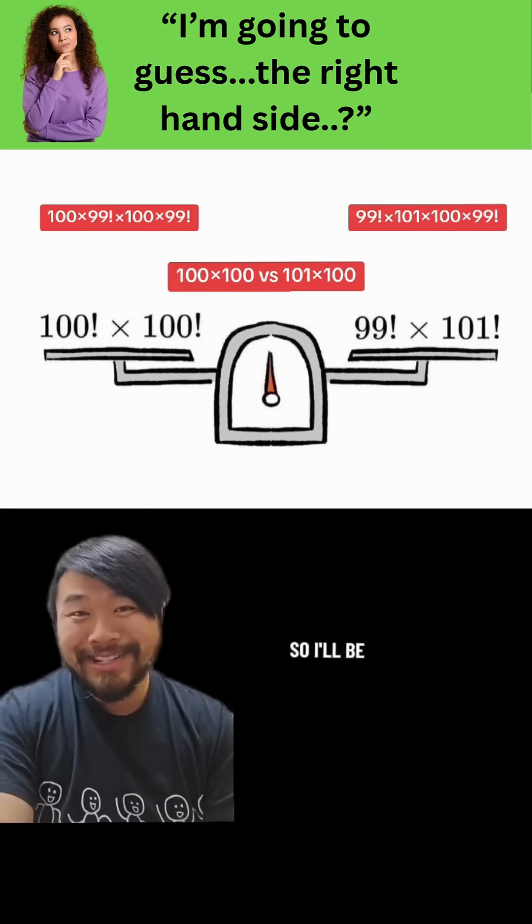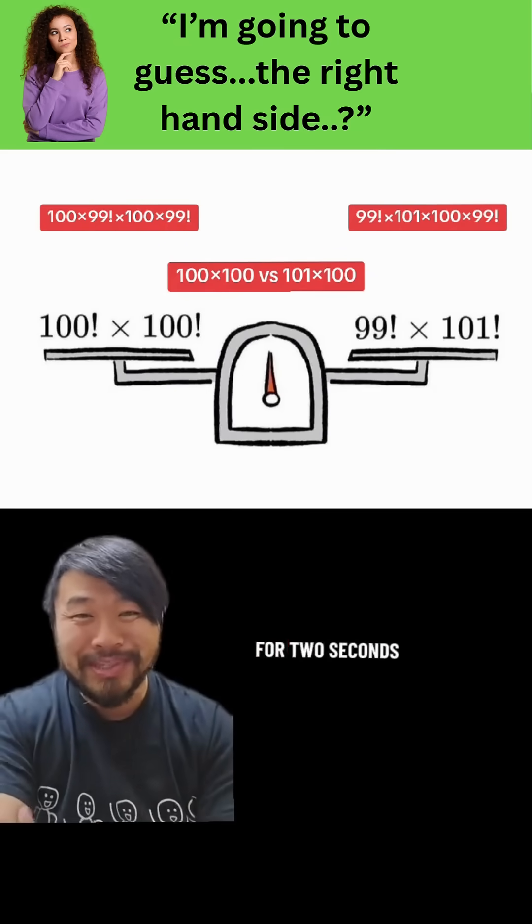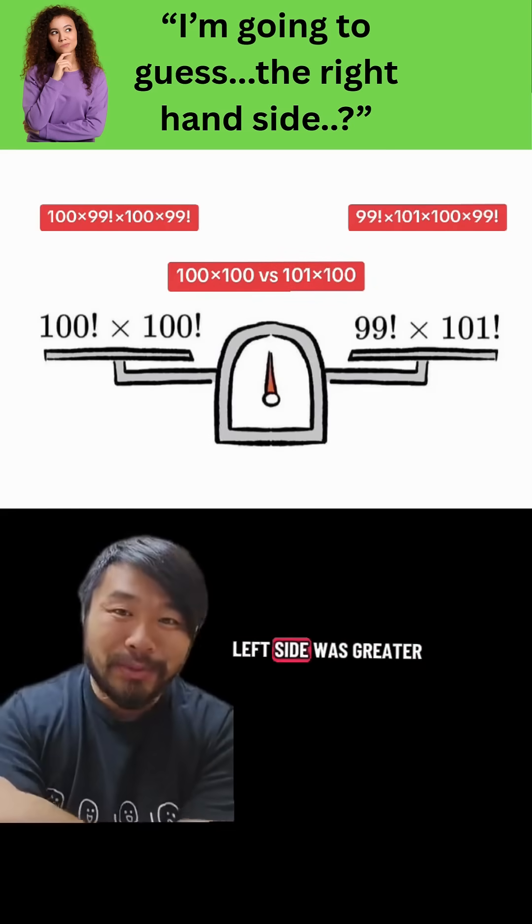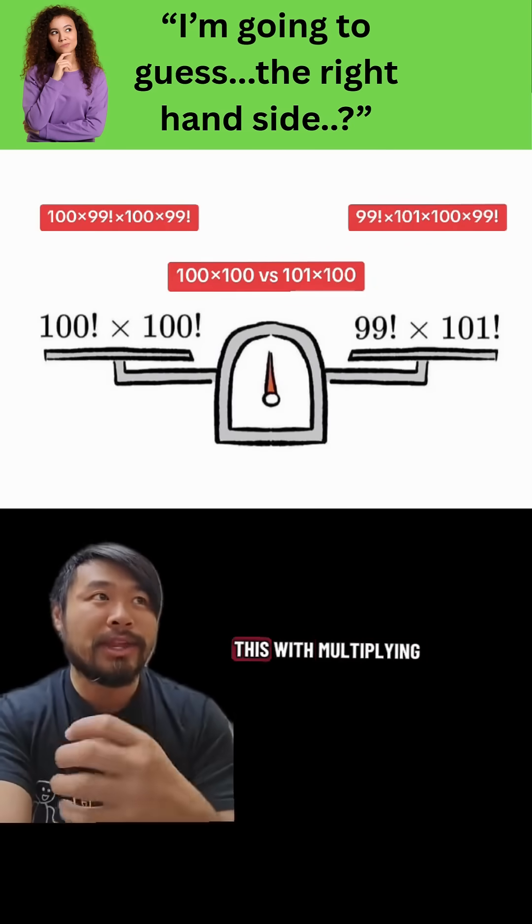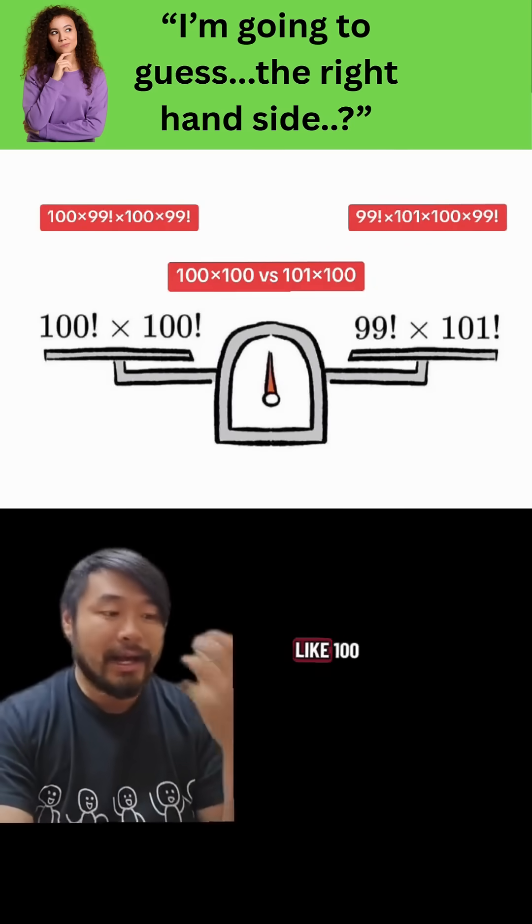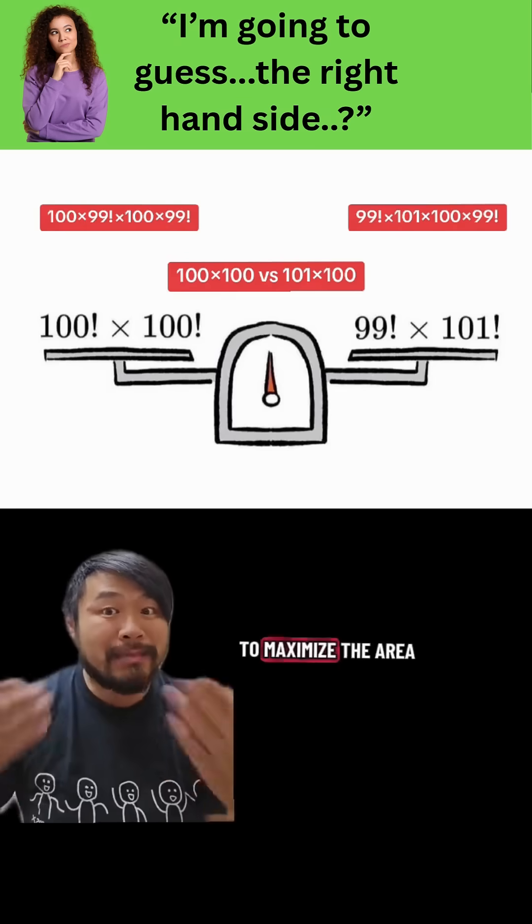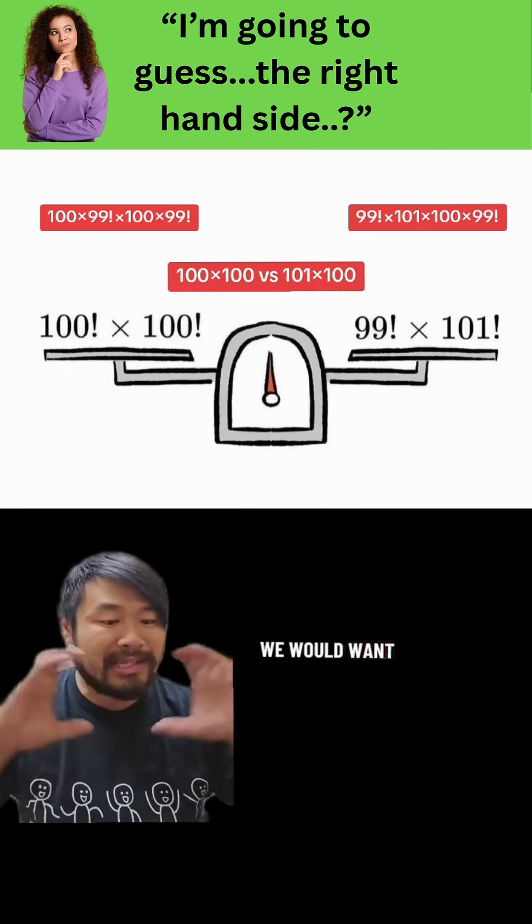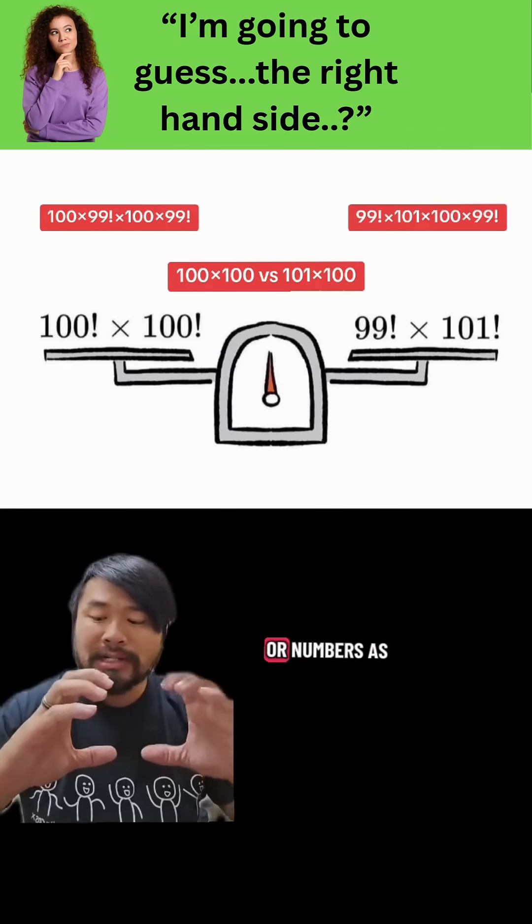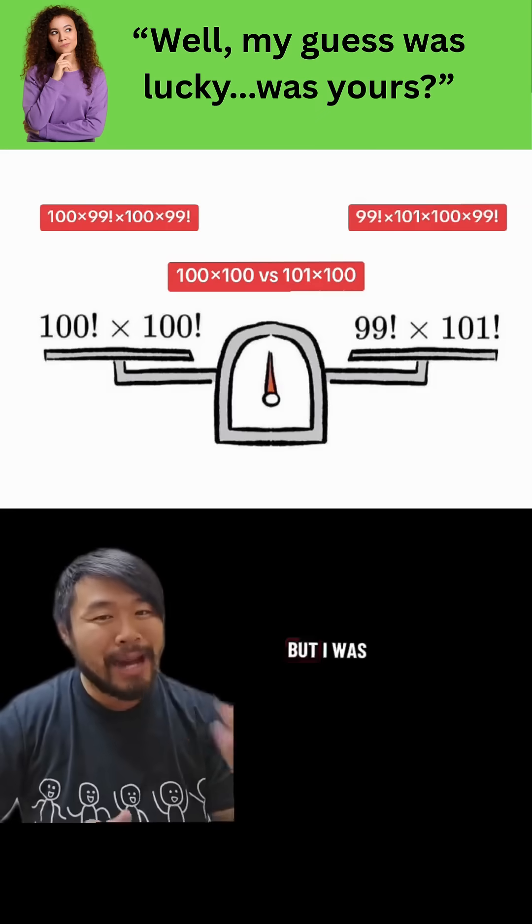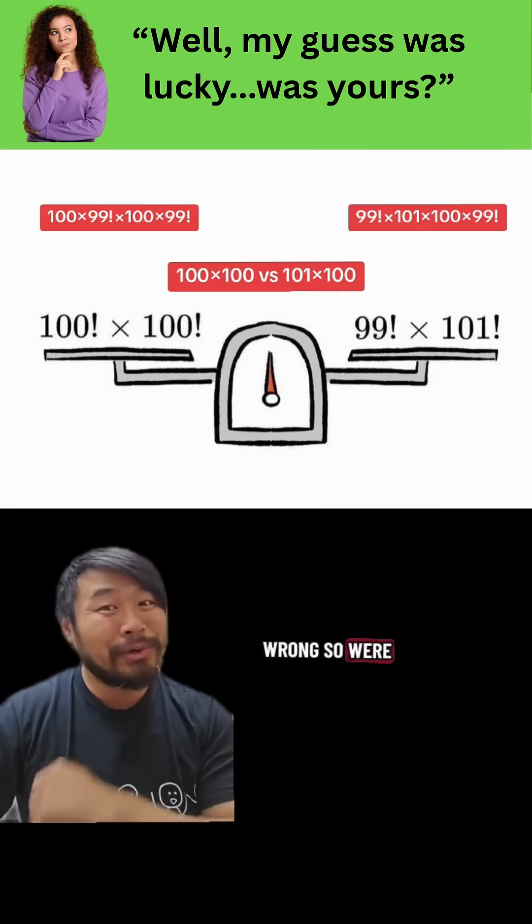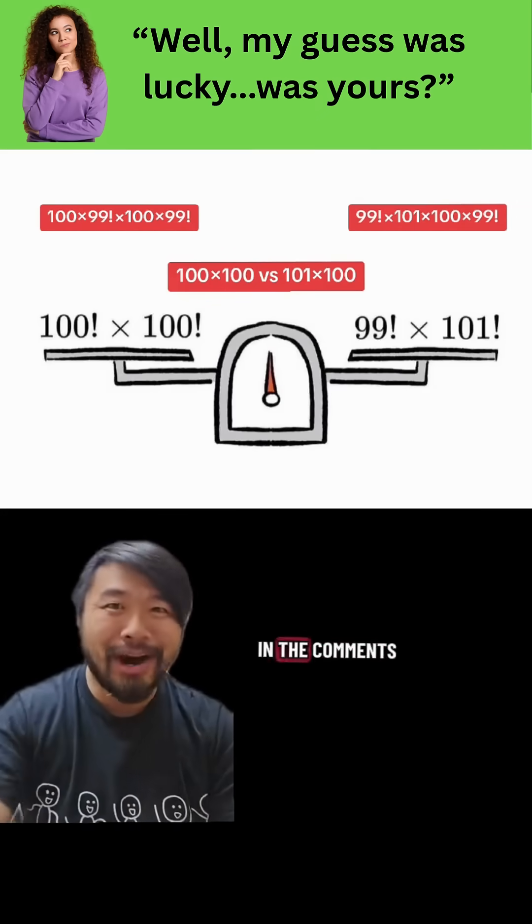I'll be honest, my initial guess was wrong. If I just looked at this for two seconds, I would have guessed that the left side was greater, because I compared this with multiplying two numbers like 100 times 100 and 99 times 101. Our goal is to maximize the area, so that means we would want the same number multiplied together, or numbers as close together as possible. But I was wrong. So were you correct? Let me know in the comments.